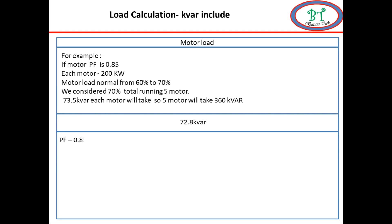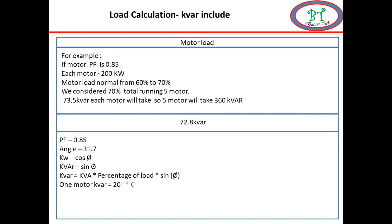Each motor power factor is 0.85. For this power factor, the power angle is 31.7 degrees — that is, the angle between voltage and current is 31.7 degrees. For kilowatt we consider cos phi; for VAR we consider sin theta. The formula for finding one motor VAR: VAR = kW × percentage of load × sin theta. So 200 kW × 0.7 × sin(31.7°) gives approximately 73.5 kVAR.